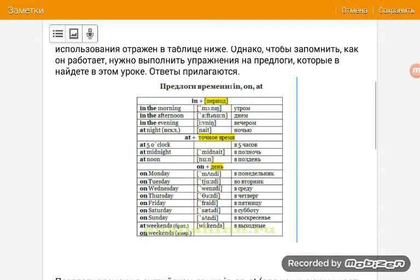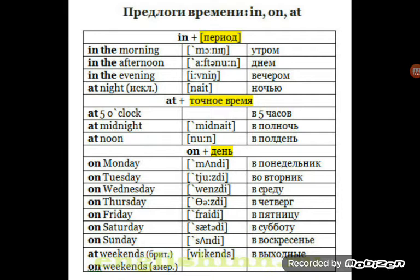Давайте взглянем на таблицу. Таблица написана вкратце — когда и где использовать предлог in, at, on. Предлог in используется плюс период. Например, утро, день, вечер или ночь. Мы будем добавлять in к какому-либо периоду: in the morning — утром, in the afternoon — днём, in the evening — вечером. Исключение: at night — ночью.